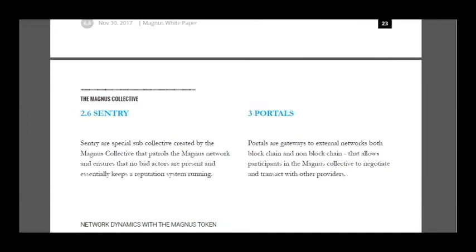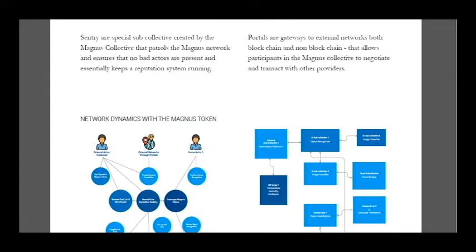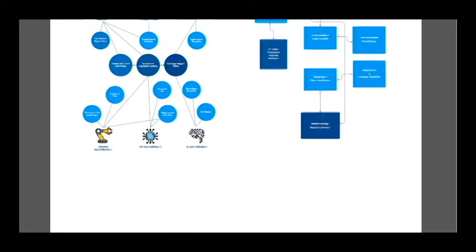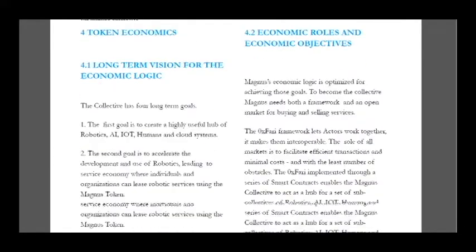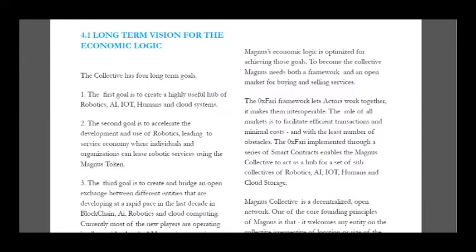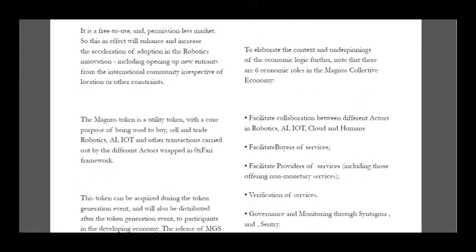Many banks are already adopting this method. Here is the network dynamics with the Magnus token — human actors and robotics — and you can see the relations between them. The first goal is to create a highly useful fabric of robotics. The second goal is to accelerate the development and use of robotics, leading to a service economy where individuals and organizations can list robotic services using the Magnus token.